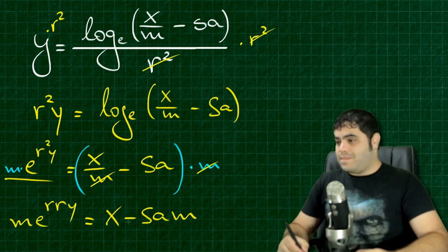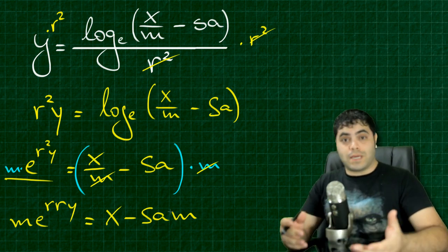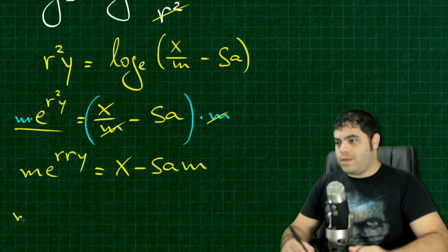Now rearranging this thing right over here, which is a multiplication, I can have Mary is equal to X minus M A S.